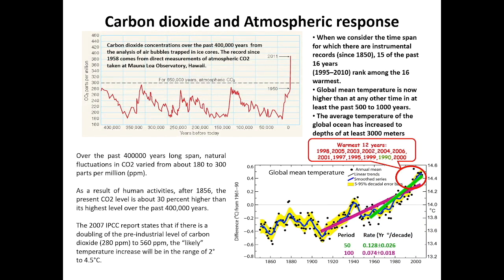Coming to the climatic response and carbon dioxide generated in the atmosphere, previous records show that over the last 650,000 years, CO2 kept fluctuating during different periods but remained below 300 parts per million. After the Industrial Revolution around 1750, it started increasing and has now reached much greater levels compared to the historical average.